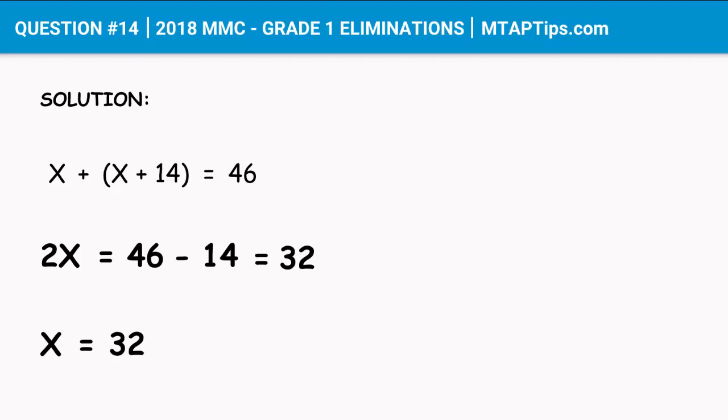Remember the plus 14 above? When we moved that on the other side of the equation, it became minus 14. Now for 2X, which means 2 times X, the operation was multiplication. If we're going to move that on the other side, the operation will become division.